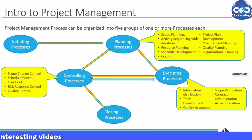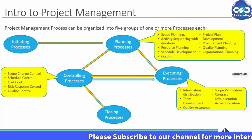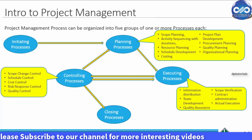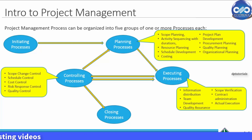The main purpose of project management is to achieve all the project goals while taking into account all the constraints. Typical constraints associated with projects are Time, Scope, and Budget. The main objective of project management is to ensure that all these processes are streamlined to make sure that the project is completed on time, within budget, and within scope.